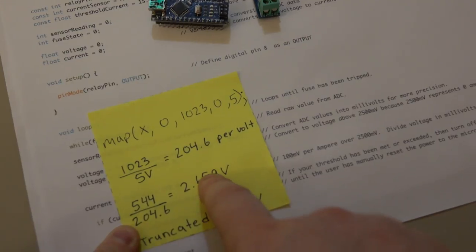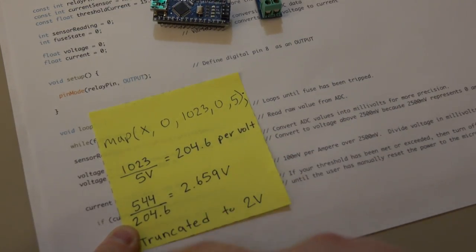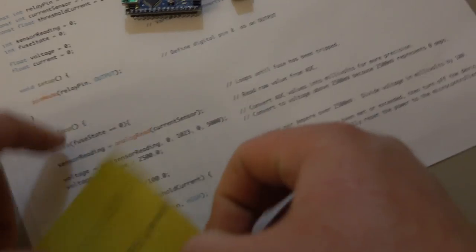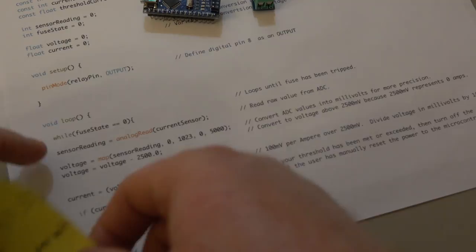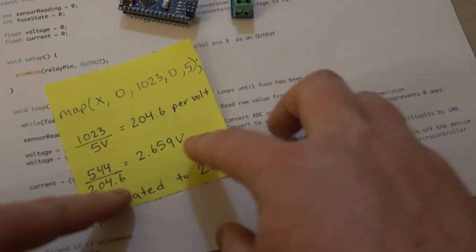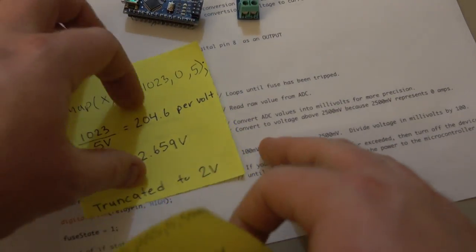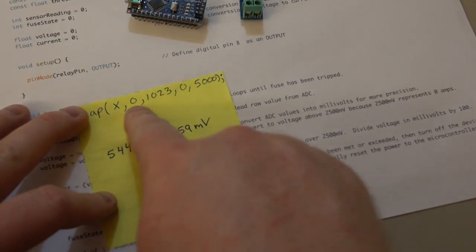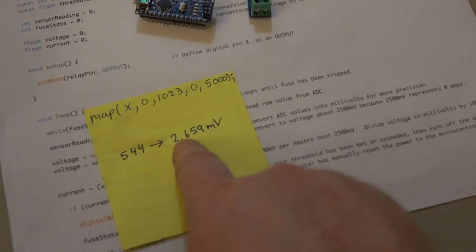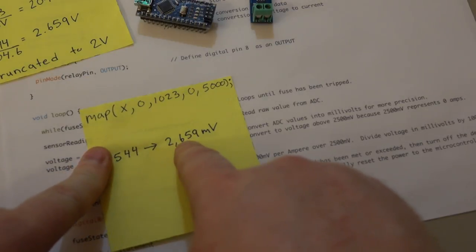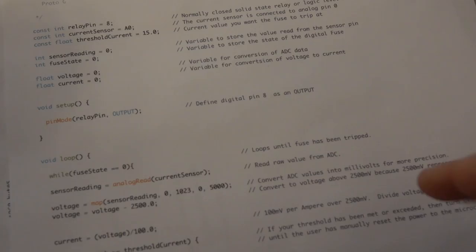Because the integer math in C doesn't round up or round down, it just truncates it. So instead of 2.659, we get 2 volts. So if you did that here, which I see that a lot, you're going to be way off on a lot of your readings. So instead we do the 0 to 5,000, and 544 equals 2,659.